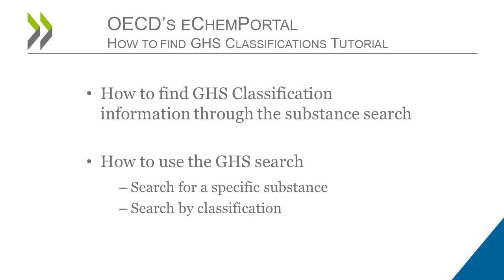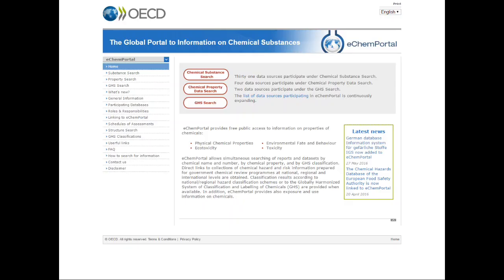In this video tutorial, I will first explain how to find GHS information through the substance search. Then I will talk about the search by classification. In order to find GHS classification information for an individual substance, one way to proceed is to perform a substance search.